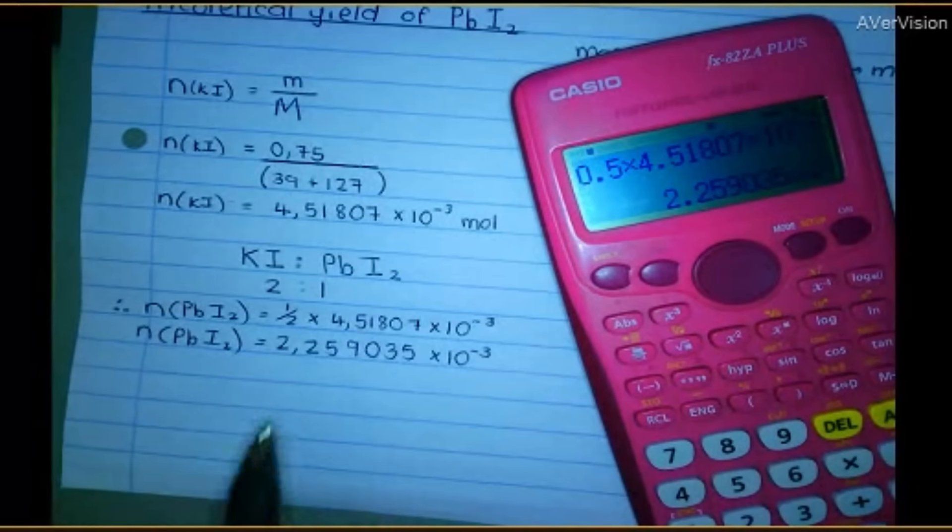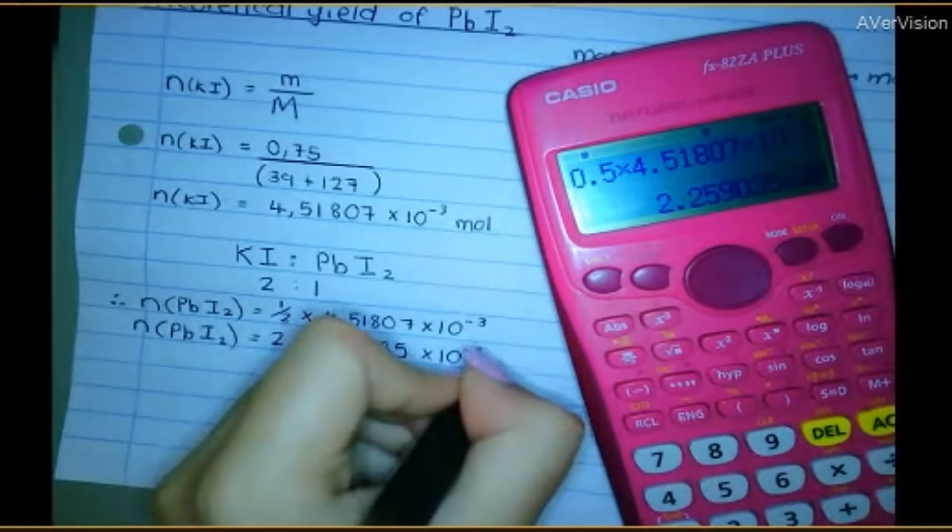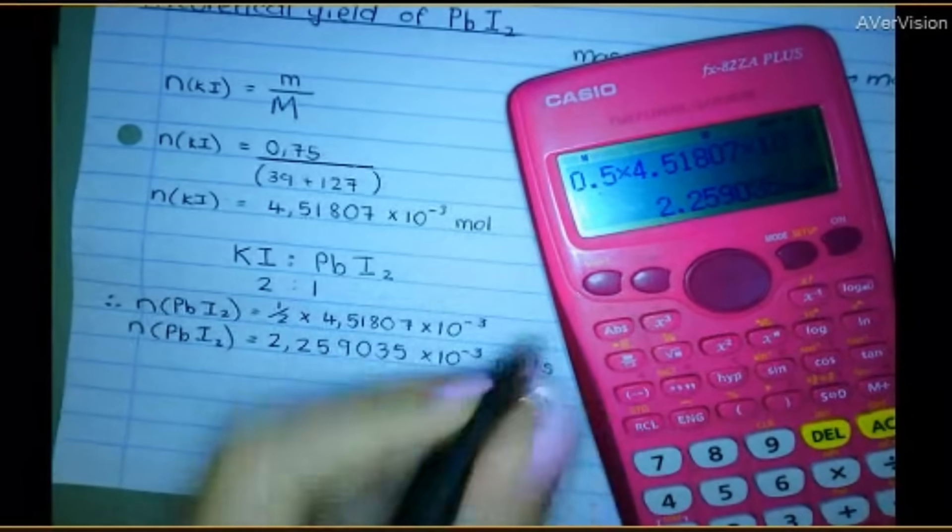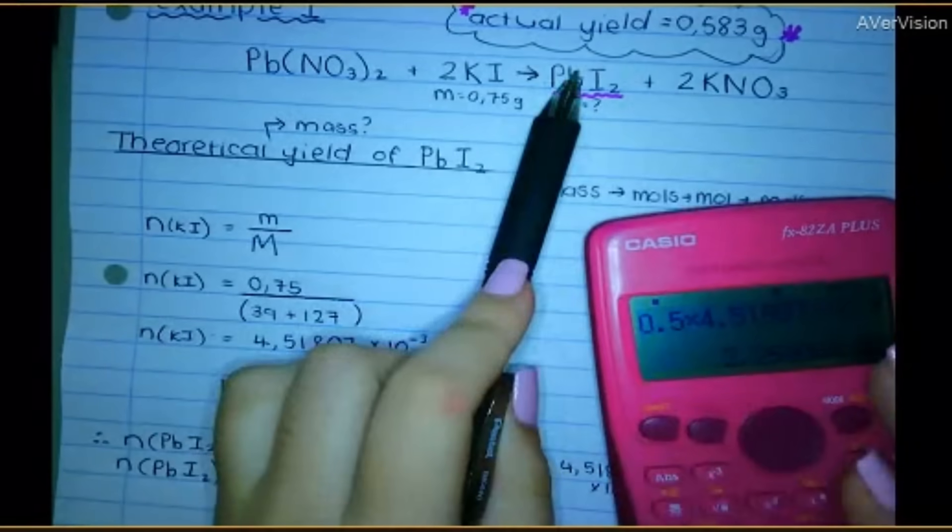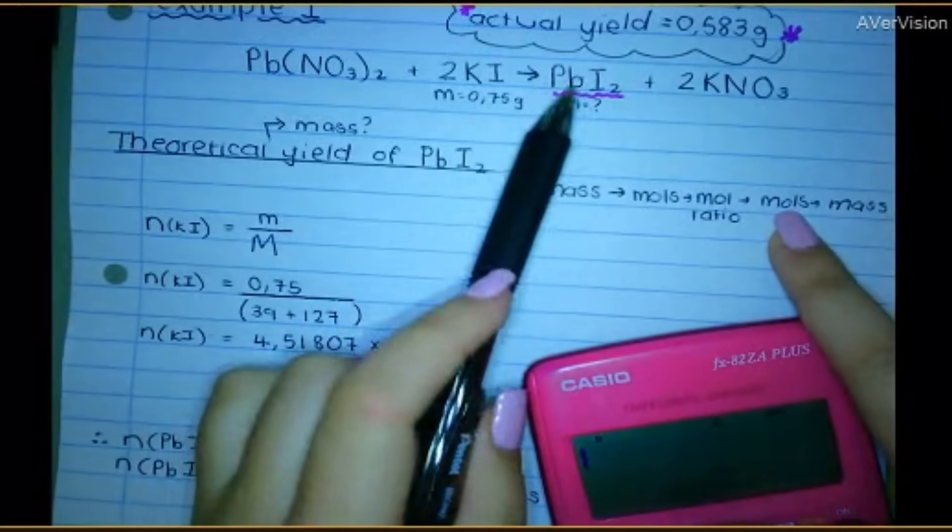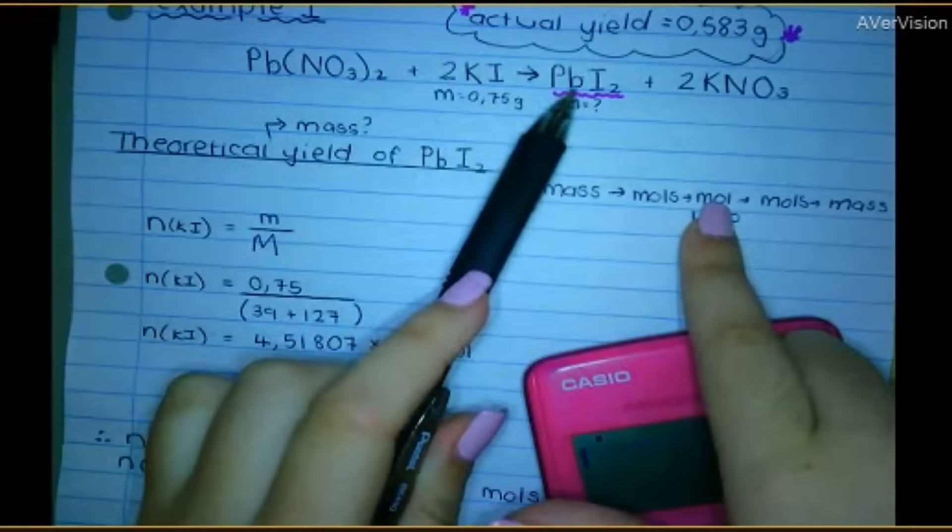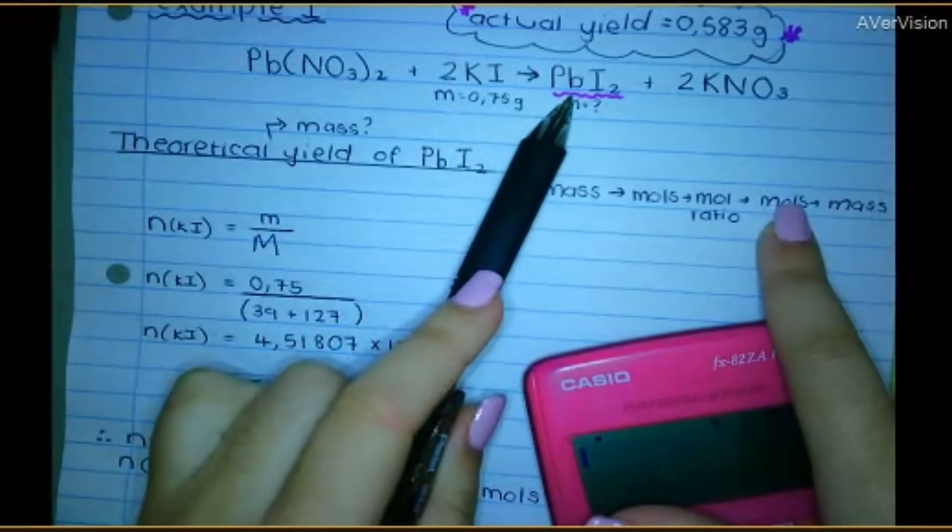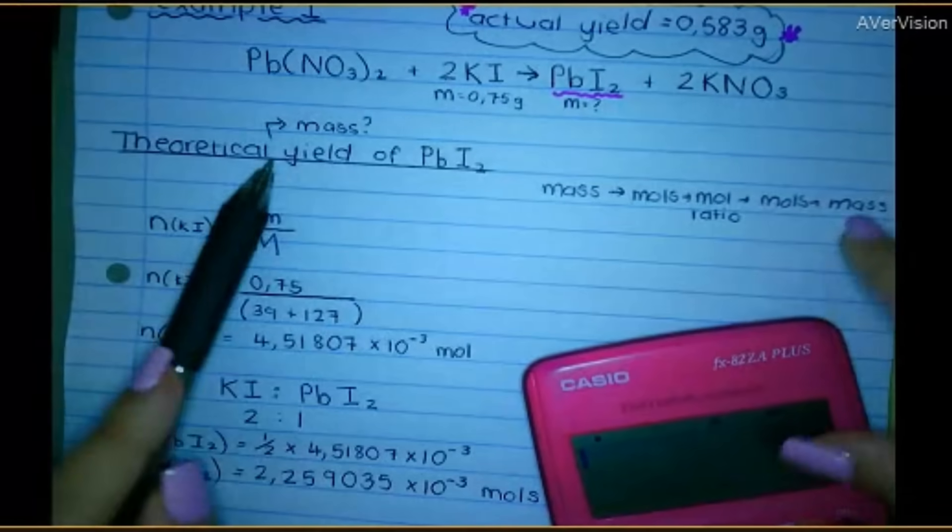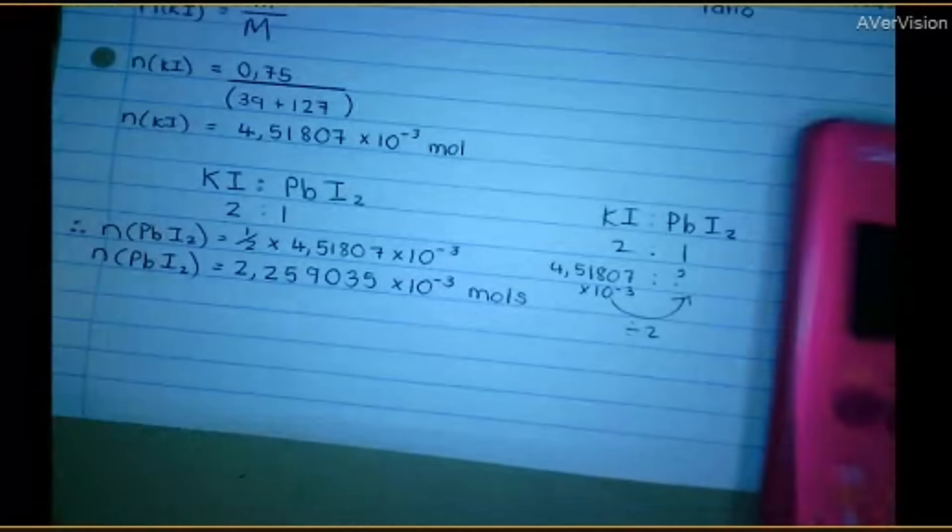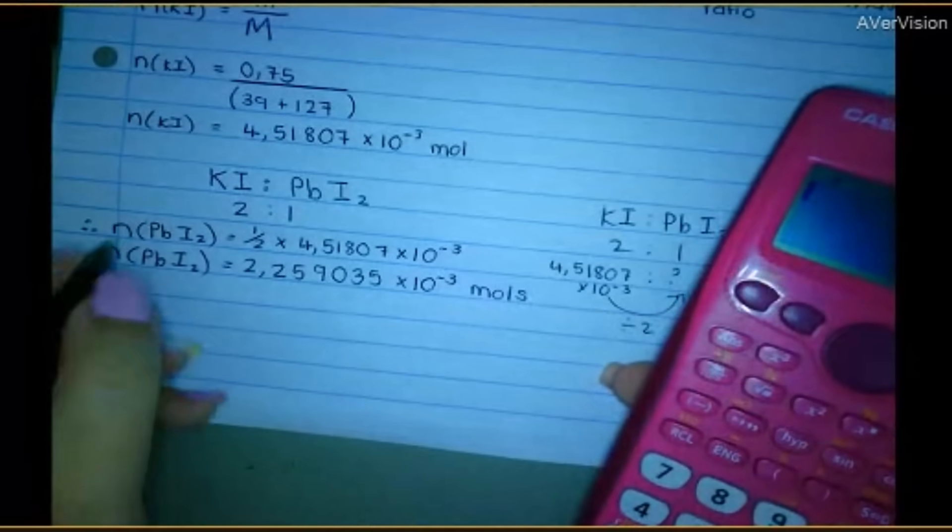So 2.259035 times 10 to the negative three. I'm not writing off because I'm mid-sum. I'm in the middle of a sum. So that means I have that many moles of PbI2. Now I have moles. So I'm kind of over here. I had the mass, converted it to moles. Then I used the mole ratio and I worked out moles of this. But I don't want moles. I need to find out the mass because that will give me the theoretical yield.